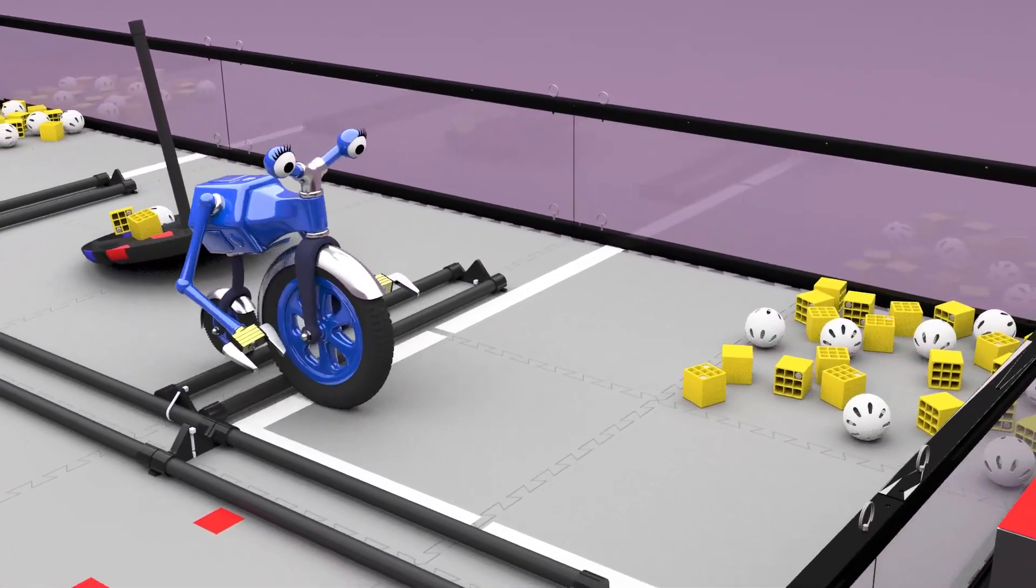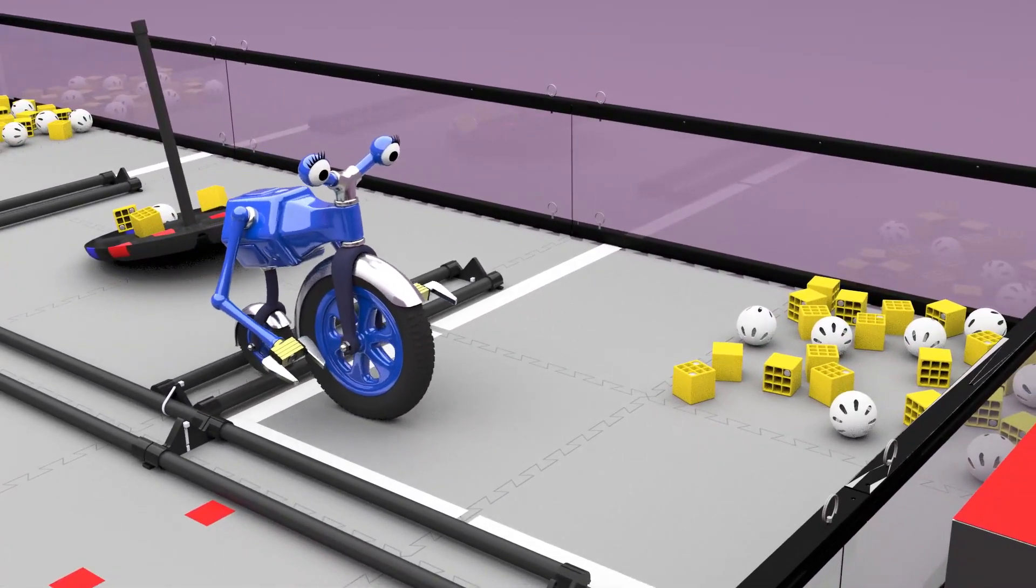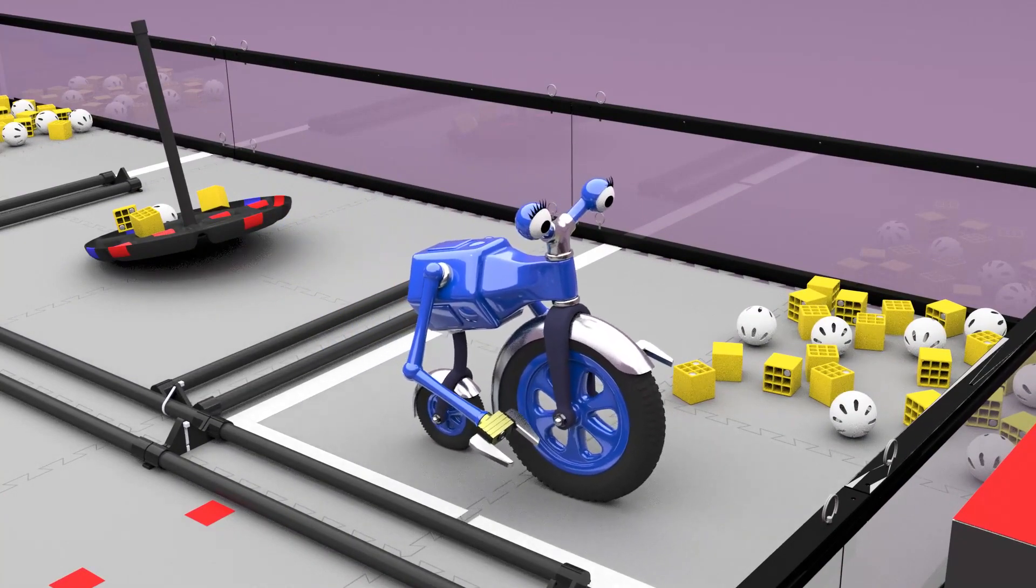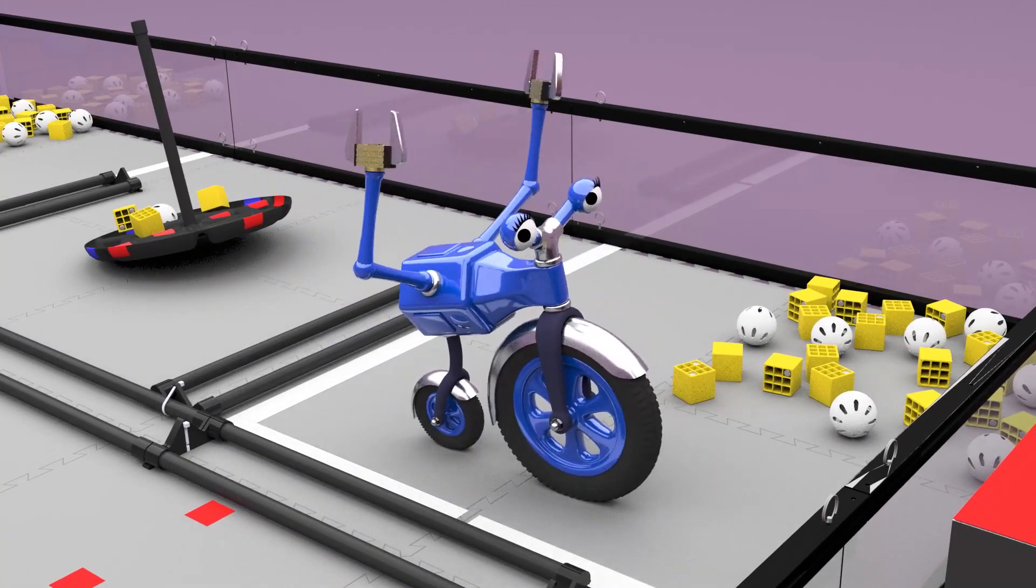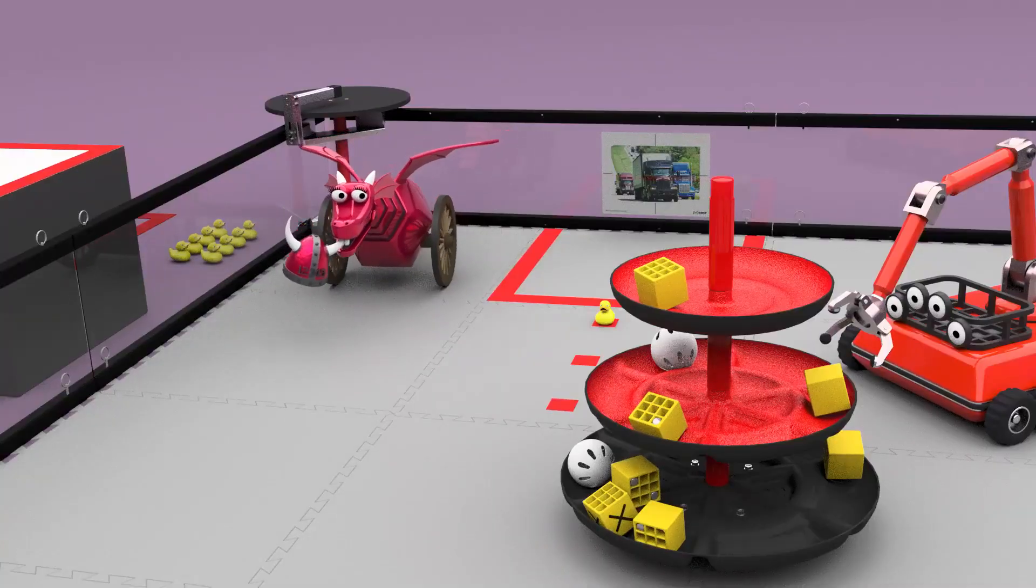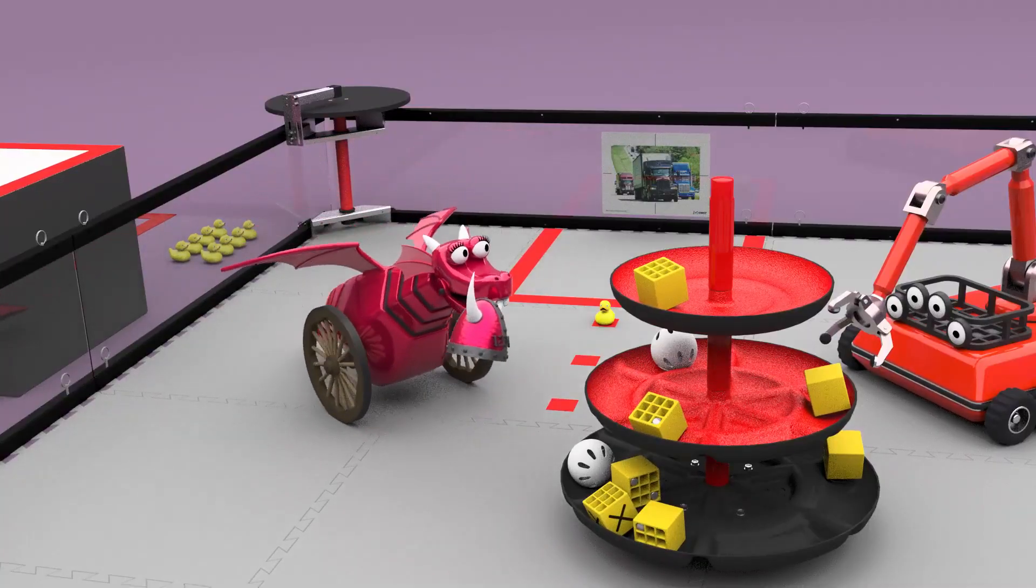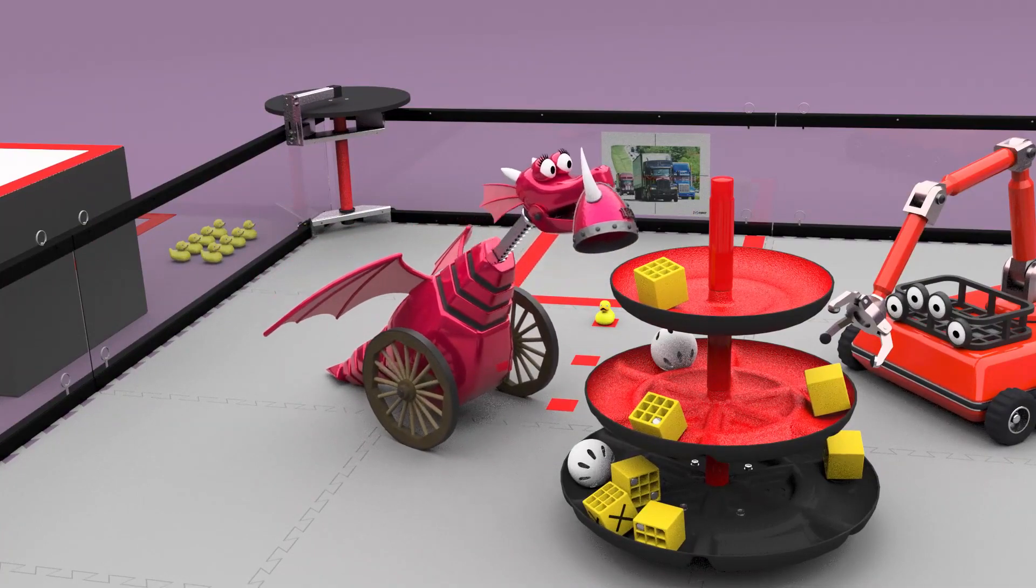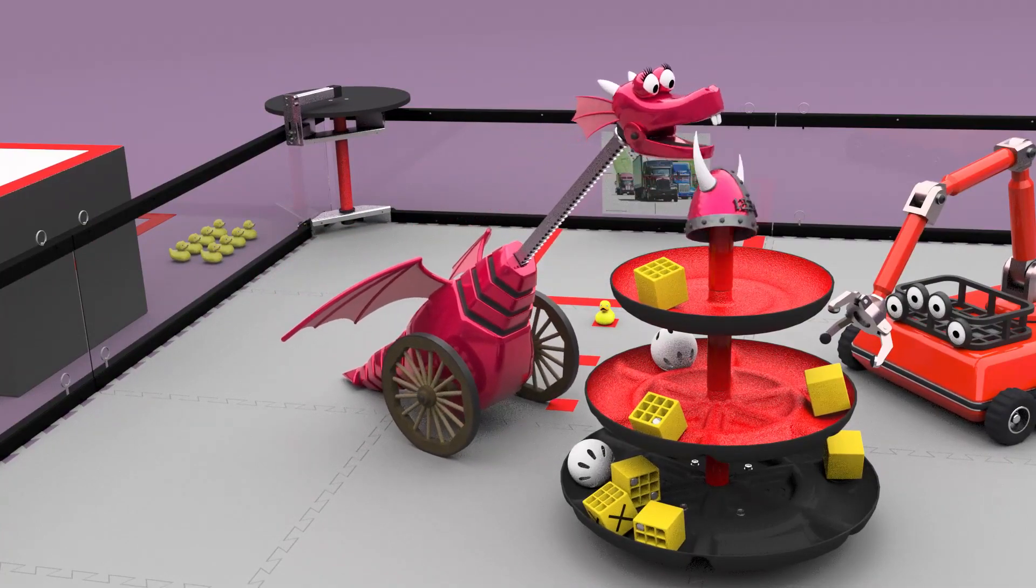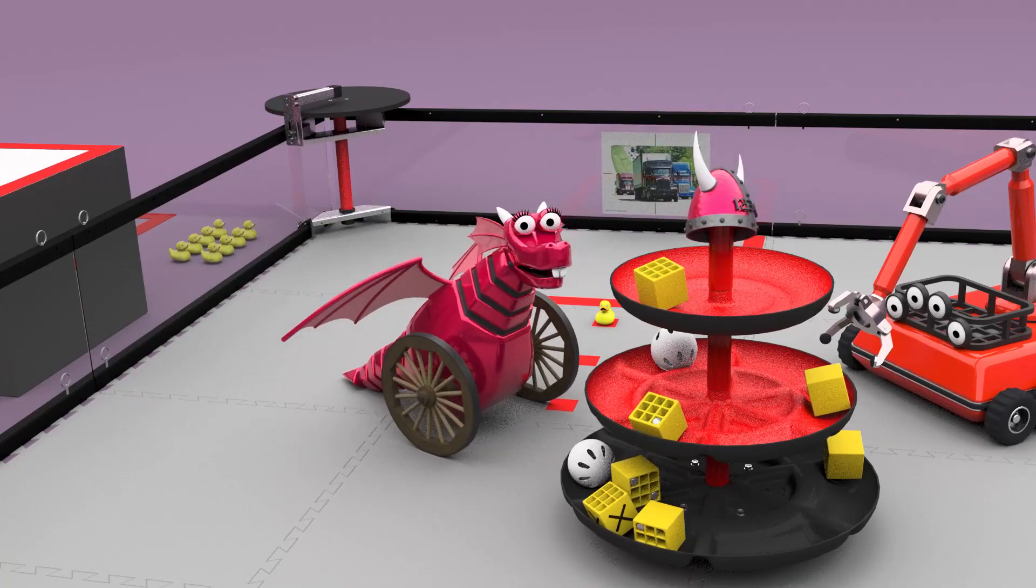Robots parked in a warehouse earn three points. However, if the robot is parked completely in the warehouse, it earns six points. Each team's shipping element, fully supported by a shipping hub center pole or another team's capped shipping element, will earn 15 points.